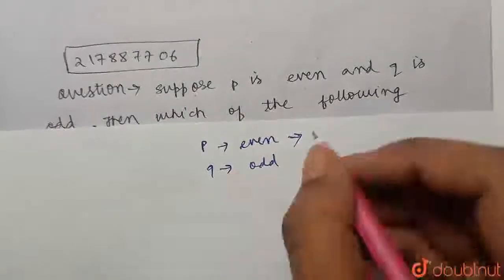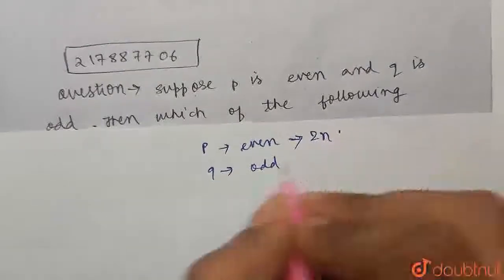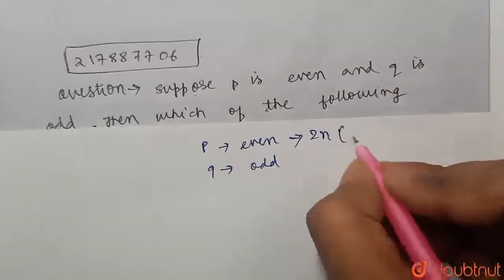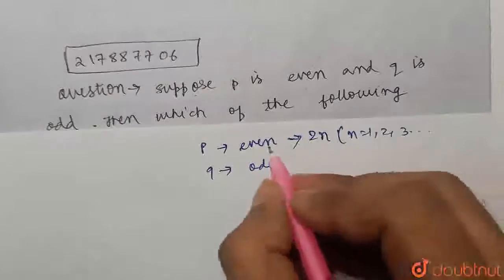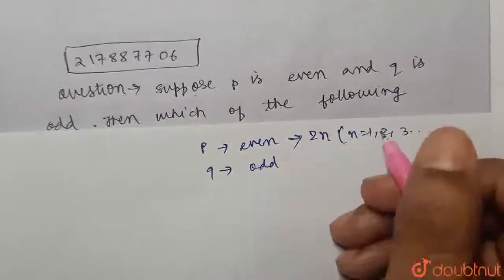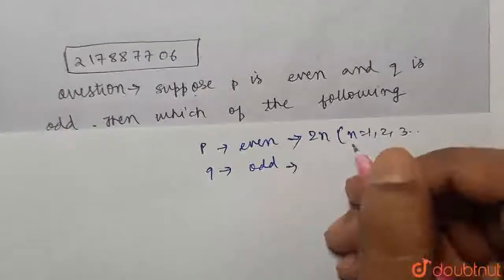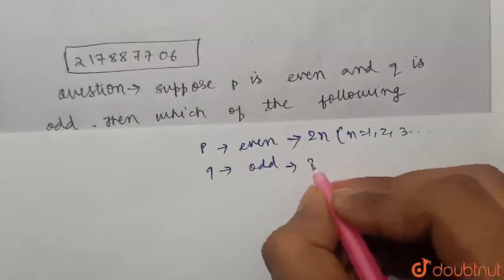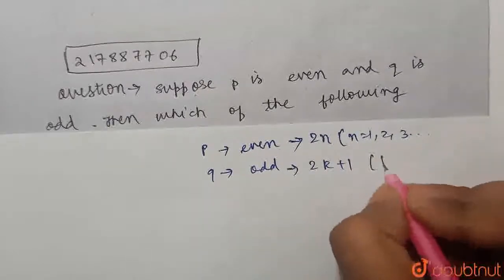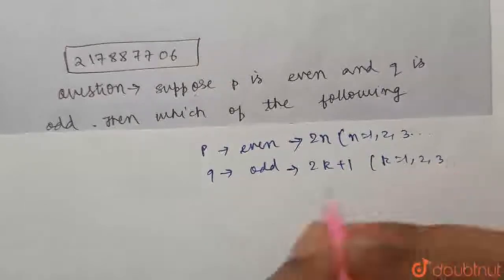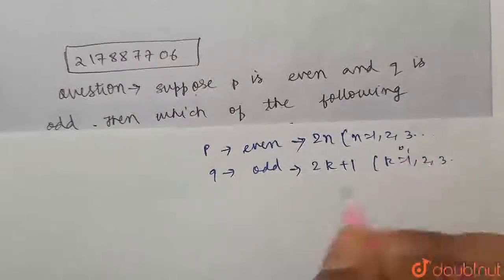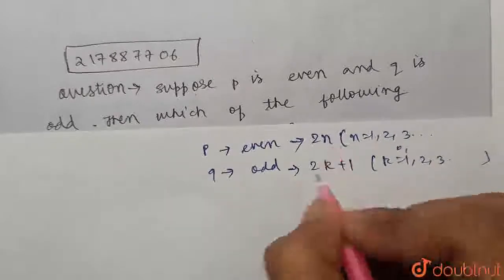So what is the general form of an even number? Let us say 2n, where n equals 1, 2, 3 or any number. Even means it is divisible by 2. And odd means it is not divisible by 2. So if it is not divisible by 2, what will be its form? Let us say 2k plus 1. Similarly, k equals 1, 2, 3 or anything, where k starts from 0. So these are the two forms.